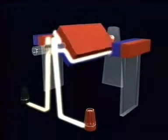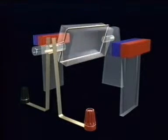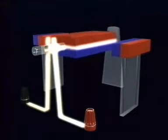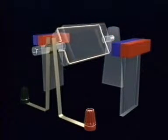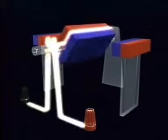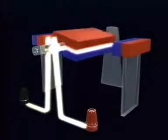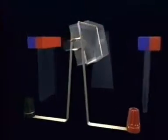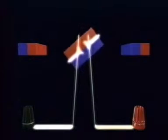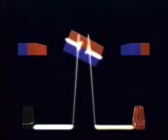Because north attracts south, the red face of the electromagnet attracts the blue face of the permanent magnet. Also, red repels red and blue repels blue. This push and pull between the electromagnet and the permanent magnets makes the coil turn.